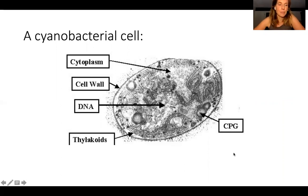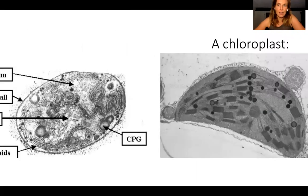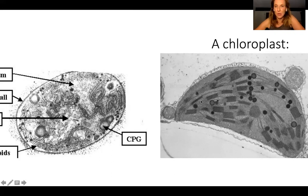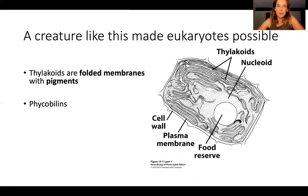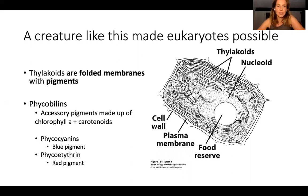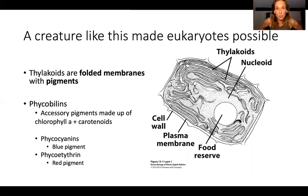If you look at a single cyanobacterium up close, it's a typical bacterial cell: cell wall, DNA, cytoplasm, and cyclic thylakoids — the photosynthetic membranes. Now look at a chloroplast from a plant — they don't look identical, but they share a lot of features. They've got thylakoids stacked into grana, DNA, cell wall, cell membrane — they're starting to look a lot alike. A creature like the cyanobacteria that exists today made eukaryotes possible through folded membranes with pigments and phycobilins.